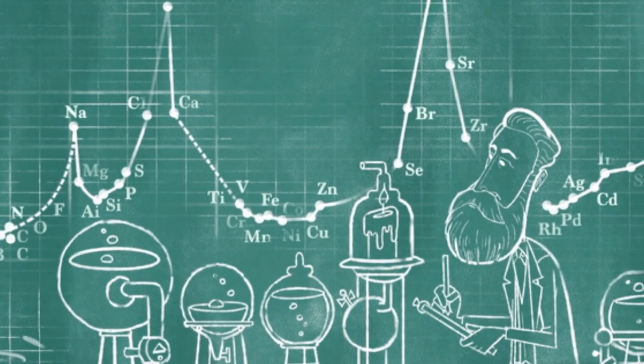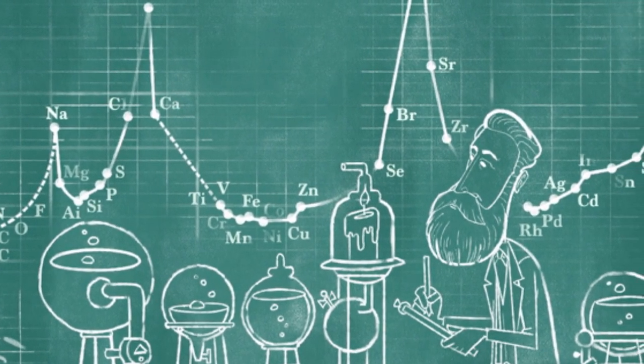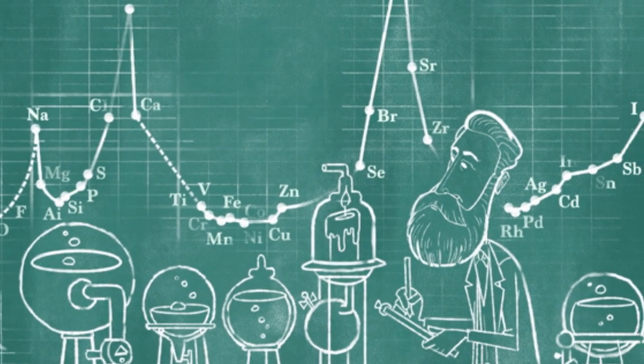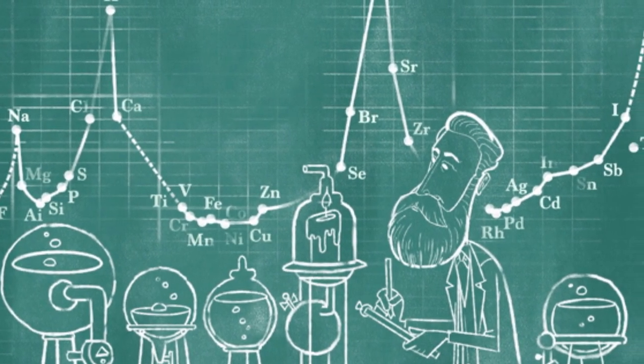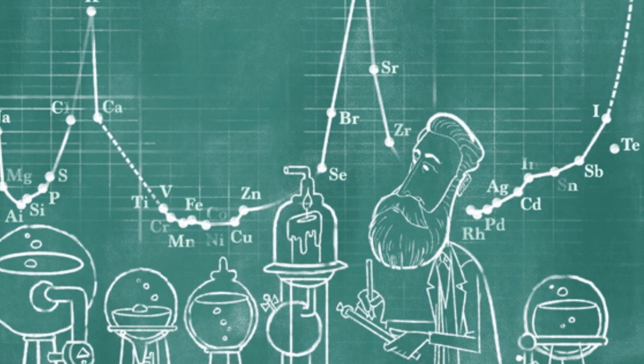The research paper included a rudimentary system for the organization of 28 elements based on atomic weight, a precursor to the modern periodic table.